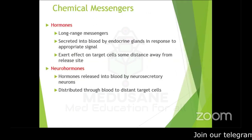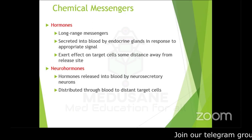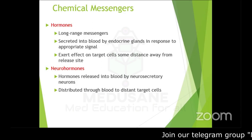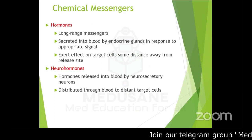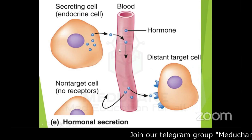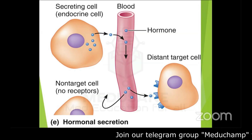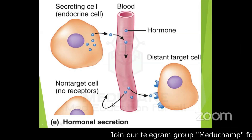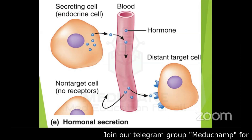Hormones are long-range messengers secreted into the blood by ductless endocrine glands in response to an appropriate signal. They travel long distances in the blood, attach to the target cell, and bring about a biological effect. Neurohormones are hormones released into the bloodstream by neurosecretory neurons, bringing about their action just like endocrine hormones. Non-target cells do not have the specific receptor, so the hormone does not attach there.